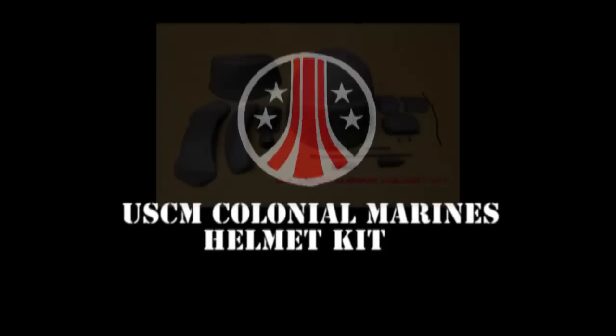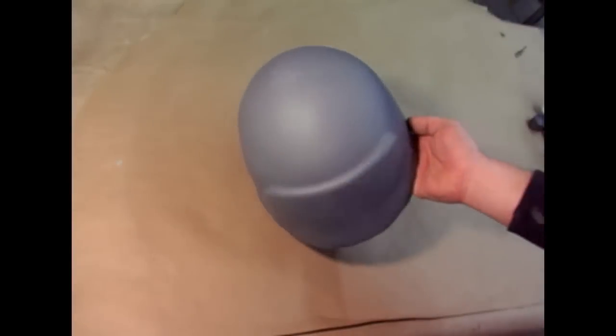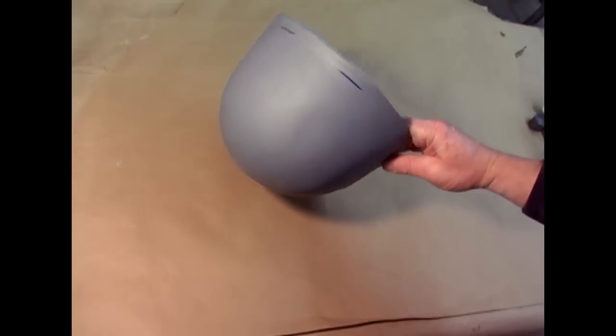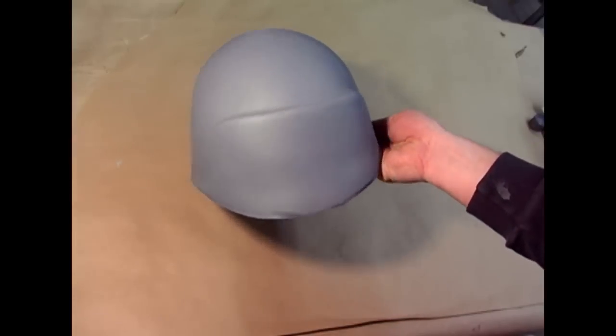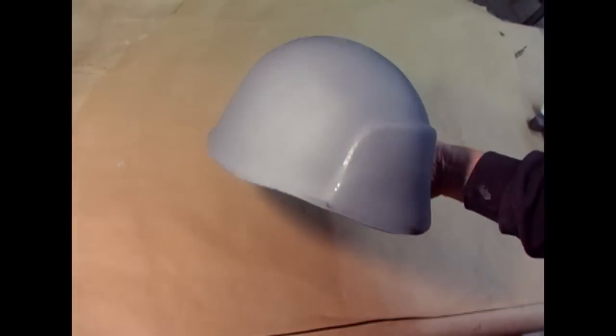This is the United States Colonial Marine helmet seen in Aliens. First up is the helmet shell, thermal formed in 0.125 gauge ABS plastic, meaning it's very strong and durable. You can crash around all day in this and not break the shell.